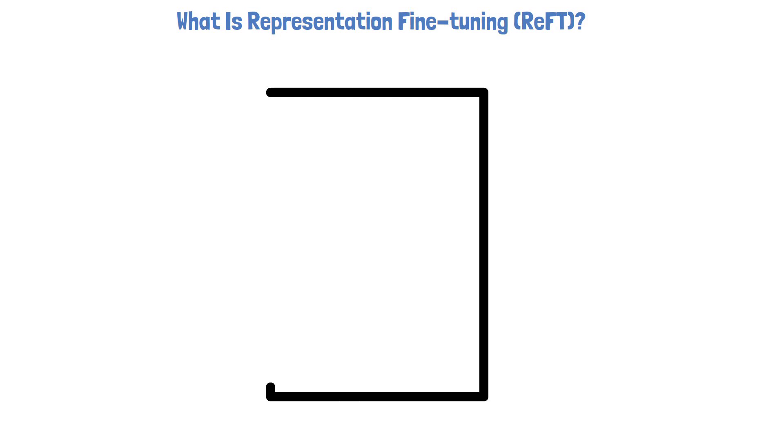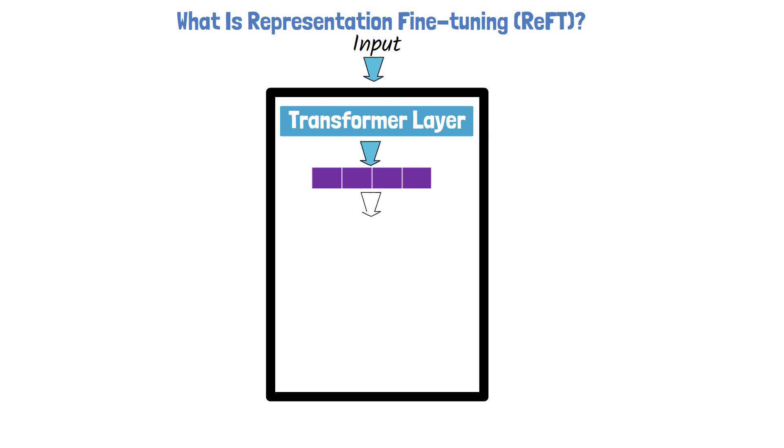Let's now move on to understand what is representation fine-tuning and how it is different than previous parameter efficient fine-tuning methods. In the following box we have a simplified transformer model, where we have multiple transformer layers. Each one includes a self-attention and a MLP, which we treat as a black box here for simplicity.